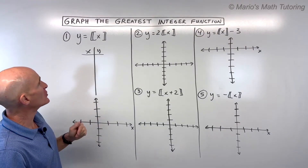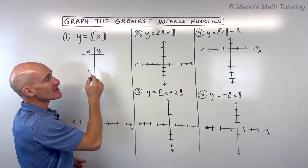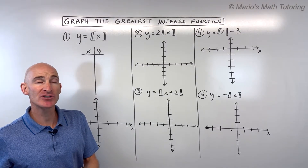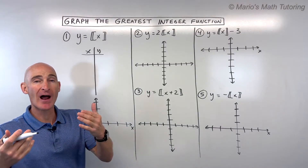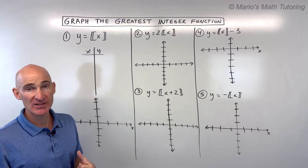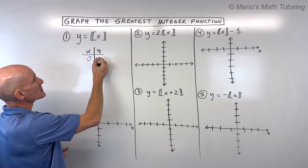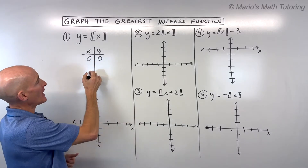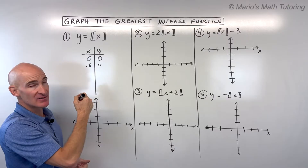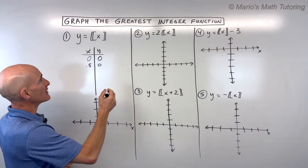The first thing we want to do is look at the notation. You see these double brackets — that represents the greatest integer function. What the greatest integer function does is it rounds down to the previous integer. So for example, if we had 0.5, this would round to 0. You always round to the left on the number line to that integer.